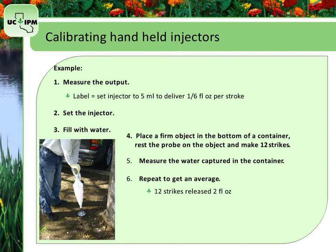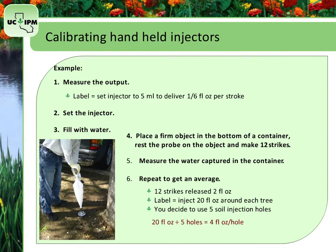If the label says to inject 20 fluid ounces around each tree and you decide to use 5 soil injection holes per tree, you would need to inject 4 fluid ounces of solution into each hole — 20 fluid ounces divided by 5 holes equals 4 fluid ounces per hole. Since 12 strikes release 2 ounces, you will need to make 24 strikes into each hole to deliver 4 fluid ounces.